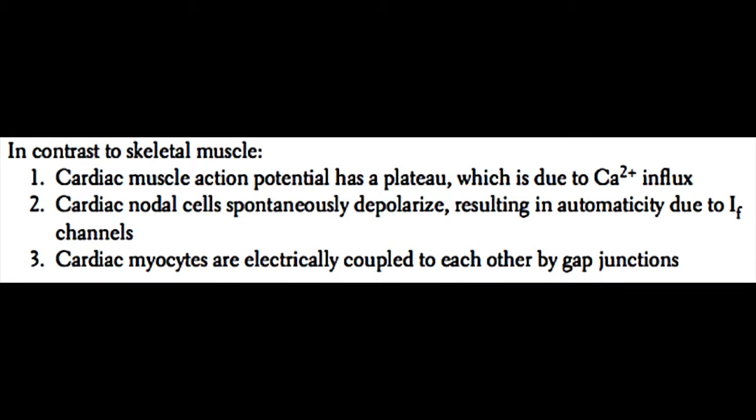Cardiac muscle cells are different than skeletal muscle cells in many ways. Here are three major examples. First, cardiac muscle action potentials have a plateau phase, also known as phase two, which is due to calcium influx.